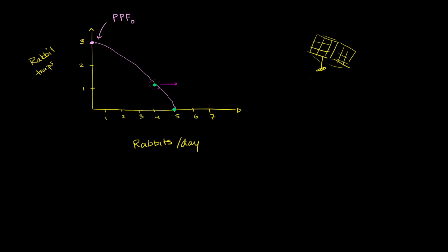So if he does that, the production possibilities frontier, having a rabbit trap won't allow him to make more rabbit traps in a day. So the most rabbit traps he can make in a day is still going to be three. But maybe now he can catch six rabbits a day. So it might look something like that.